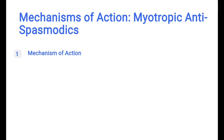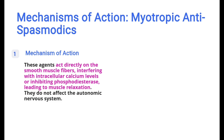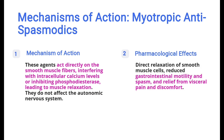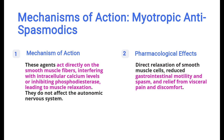Now we'll understand the mechanism of action for myotropic antispasmodics. These drugs directly act on smooth muscle fibers and do not have a role in the autonomic nervous system. In the muscle fibers, they interfere with intracellular calcium levels and inhibit phosphodiesterase, which leads to muscle relaxation. Their pharmacological effects include direct relaxation of smooth muscle cells, reduced gastrointestinal motility and spasms, and relief from visceral pain and discomfort.